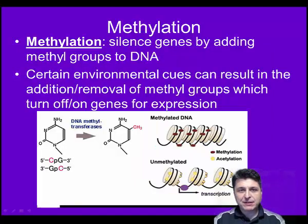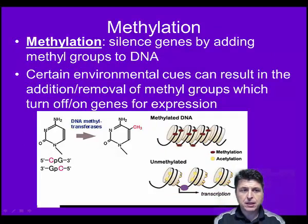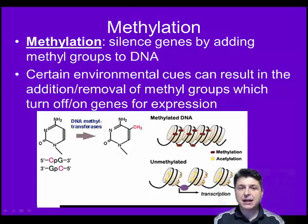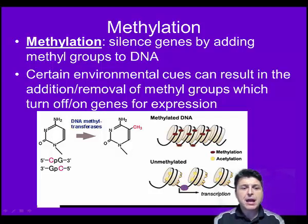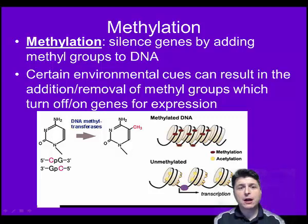One way that environmental factors can turn genes off is through a concept known as methylation. Methylation occurs when a methyl group is added to a DNA base, affecting the ability for that particular gene to be transcribed — effectively silencing that gene. Adding methyl groups causes the DNA to become very tightly coiled, making it very difficult for RNA polymerase to transcribe that DNA sequence, and without transcription, we won't have production of that particular protein.